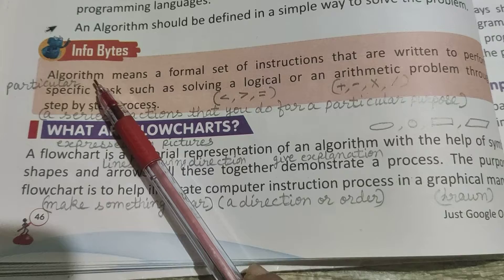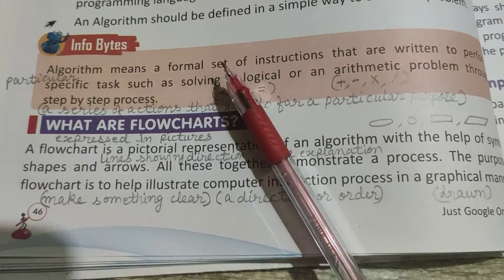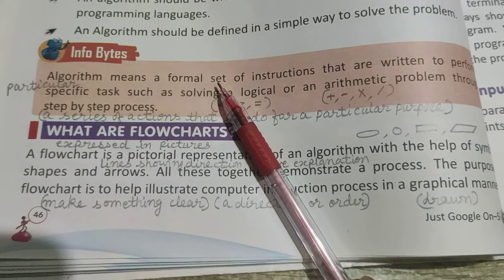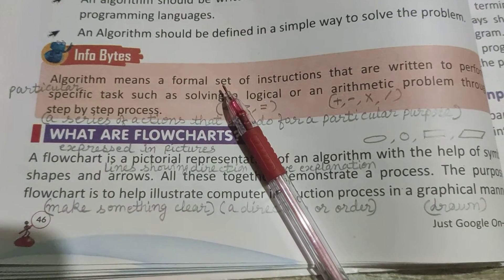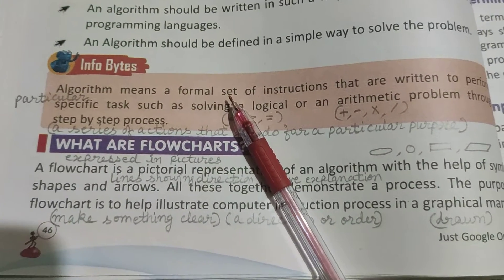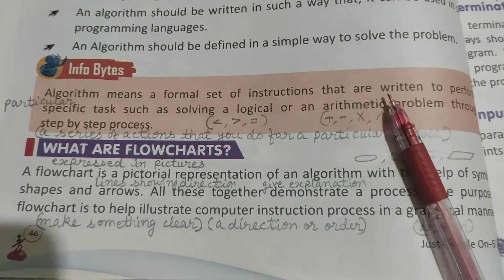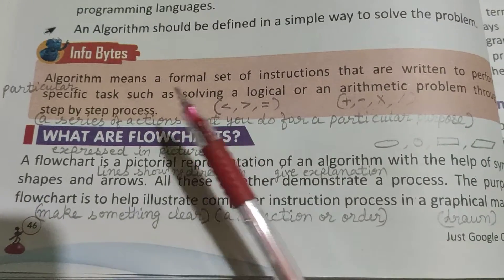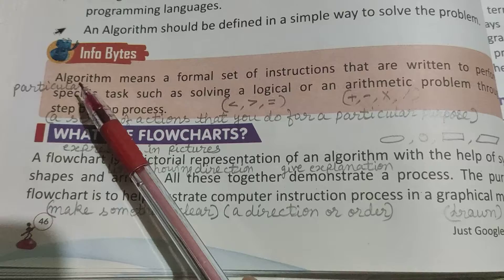Algorithm का मतलब है एक formal set — formal set मतलब उसमें सारी formalities हैं, जैसे कि अब शुरू करिये, अब value दीजिये, अब values को read करिये, फिर calculate करिये, compare करिये — यह सब formalities हैं। Instructions means order, जो की लिखी जाती है perform करने के लिए specific task — specific means particular task।